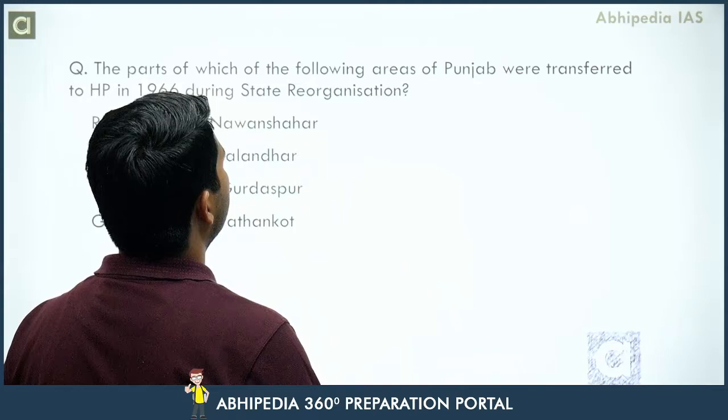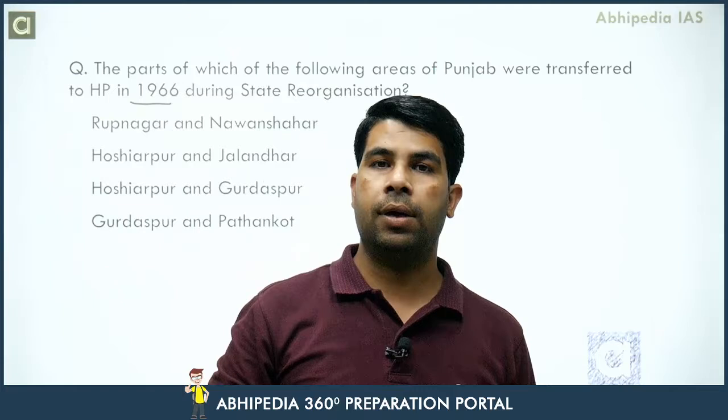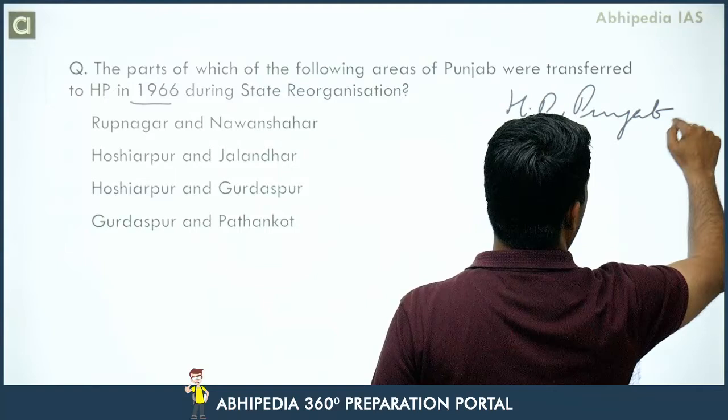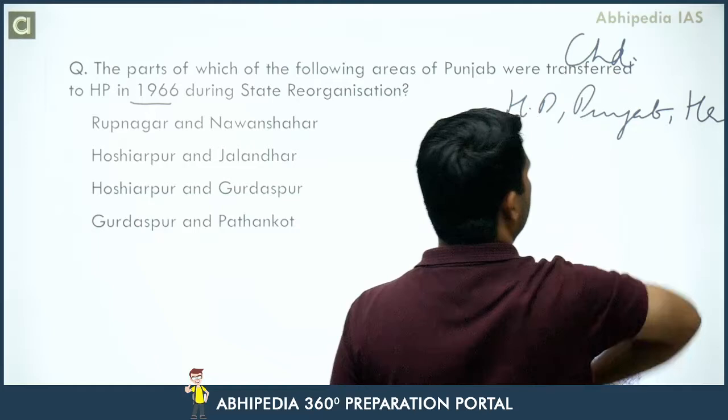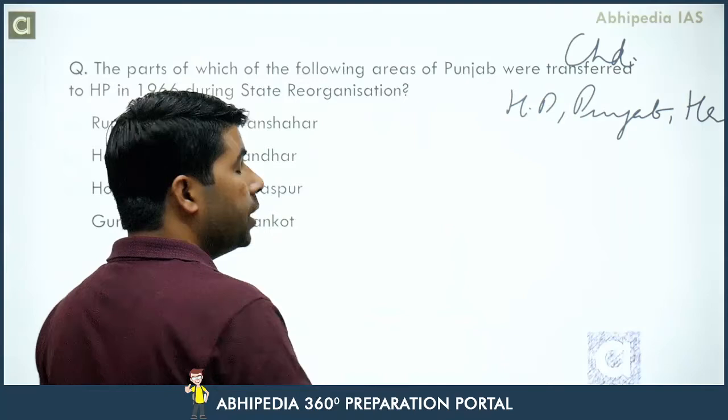Next question: Parts of which area of Punjab were transferred to Himachal Pradesh during state reorganization in 1966? At that time, Haryana was carved out and Chandigarh became a separate UT. Some areas of Punjab were then given to Himachal Pradesh. The confusion is about which specific area — let's recall it.